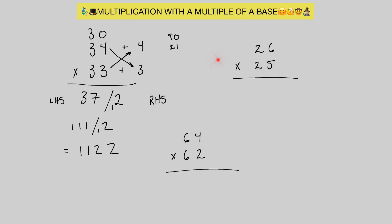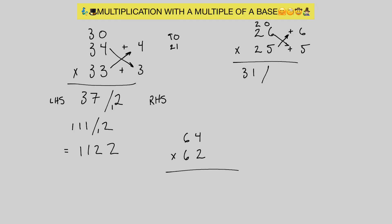Let's do another example: 26 times 25. Here we're working off a base number 20. 26 is plus 6 away from 20, and 25 is plus 5 away from 20. For our left hand side, we either add 6 to 25 or add 5 to 26 — either way we get 31. For our right hand side, we multiply the deficiencies: 6 times 5. We only have one zero in our base, so we're only allowed one digit in the right hand side. We write 30 as a small 3 and a big 0, because that 3 is going to have to carry over.